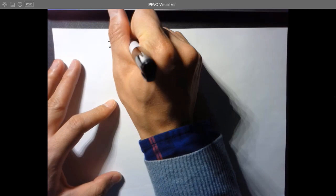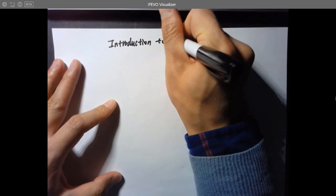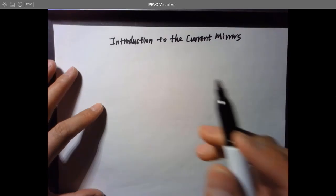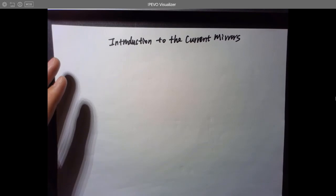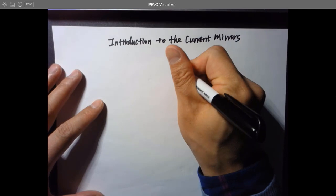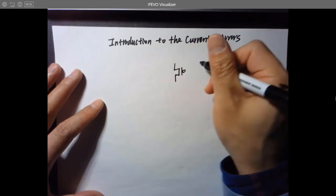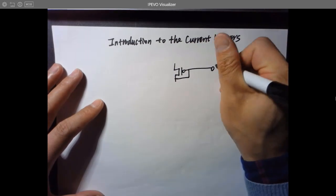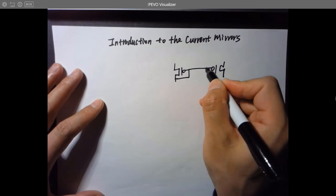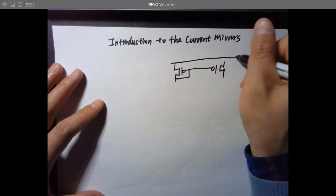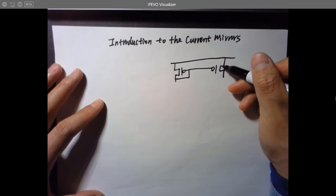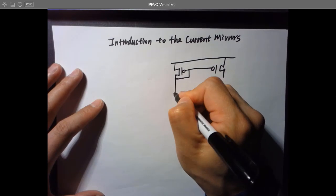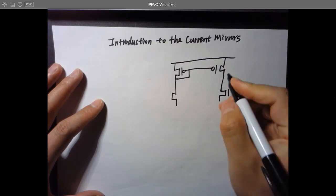Introduction to the current mirrors. Let's draw the big picture first. Why do we use current mirrors and where are they? Remember the differential pair we learned previously? There's a drain-to-source, gate-to-drain connected PMOS, and on the other side there's another one. Keep in mind, over here we didn't ground the gate. Instead we shorted the two gates together. The reason is the internal resistance of this channel will be a lot higher than the diode connection resistance.